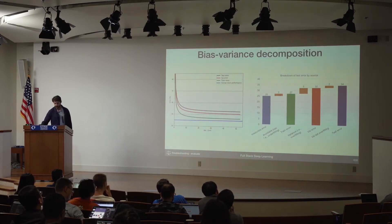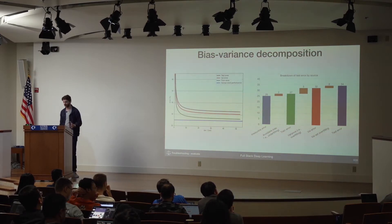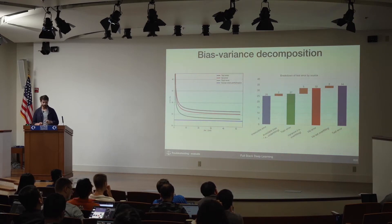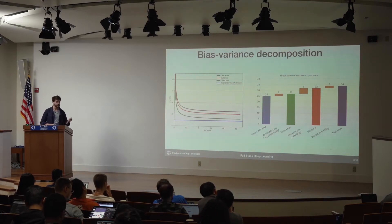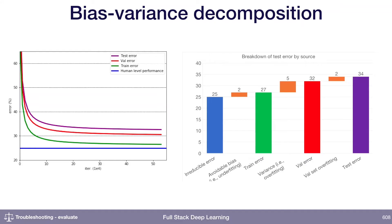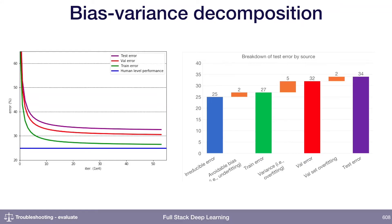The next component on top of that is your variance, which is also known as your over-fitting. That's the gap between your training error and your validation error — how much worse is your model doing on the validation set than it is on the training set? And then finally, there might be a gap between your validation error and your test error, which is a measure of how much you're over-fitting to your validation set.